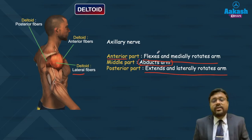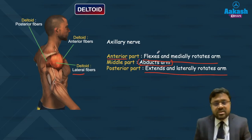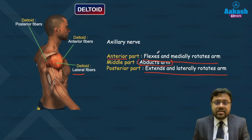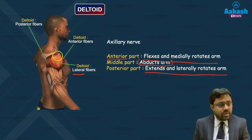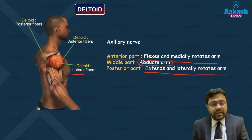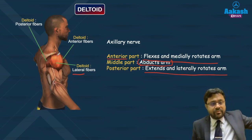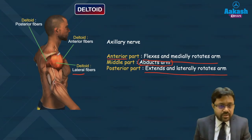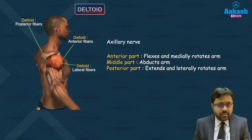If the deltoid is paralyzed, the rounded contour of the shoulder will be lost due to atrophy of the muscle. There will be impairment of mid-range shoulder abduction, and the main functions of the deltoid will be lost.